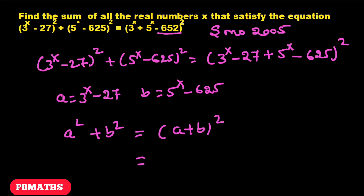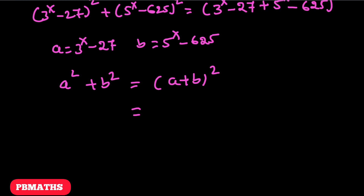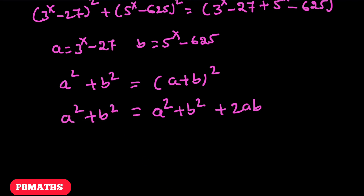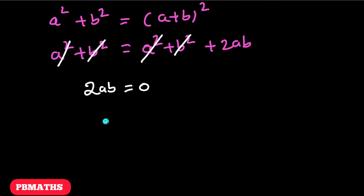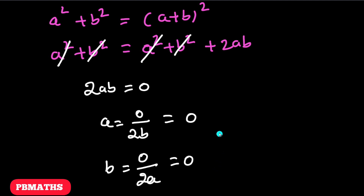The right hand side uses the algebraic identity (a + b)² = a² + b² + 2ab. The left hand side has a² + b². We can cancel a² + b² from both sides, and we are left with 2ab = 0.